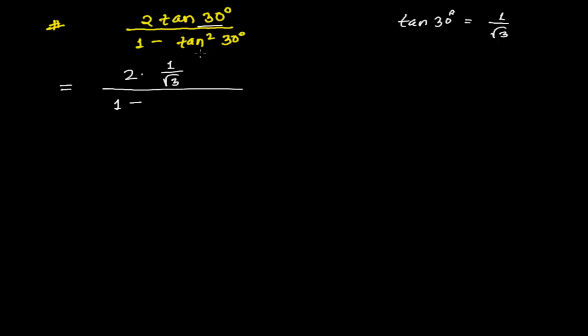1 minus, and it is tan² 30°. So again, tan 30° is 1 over √3, right? So 1 over √3, I'm going to use it here. 1 over √3, and it seems it's square, so let me square it.